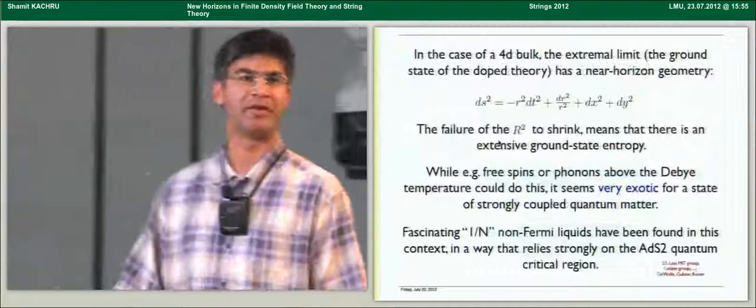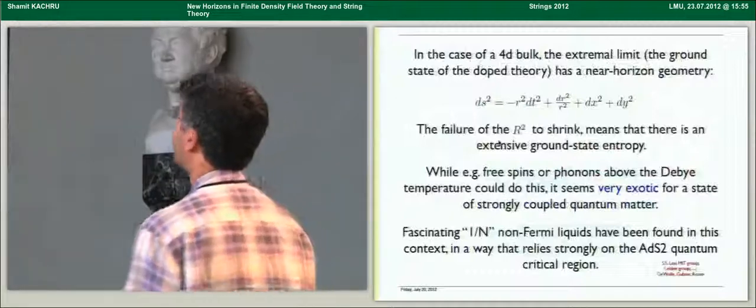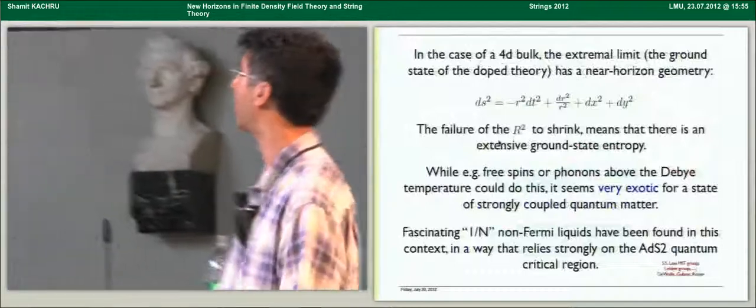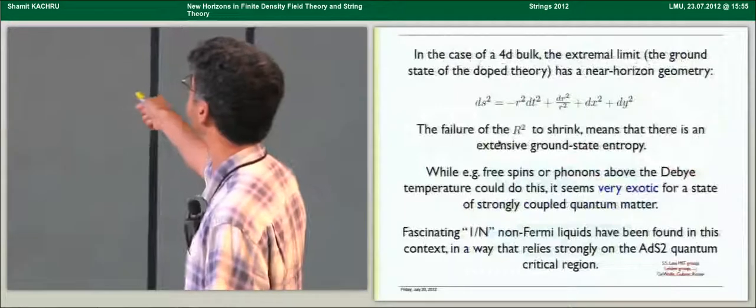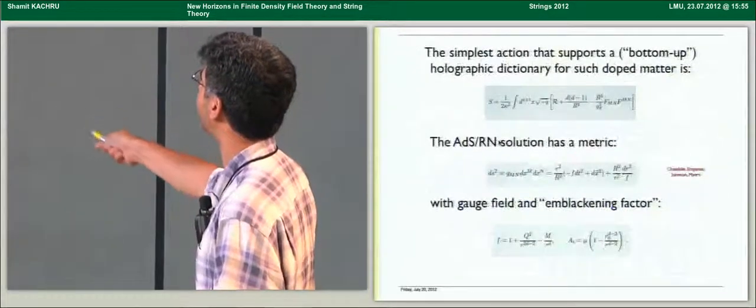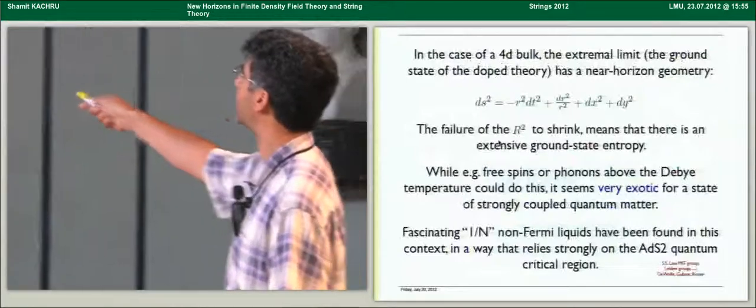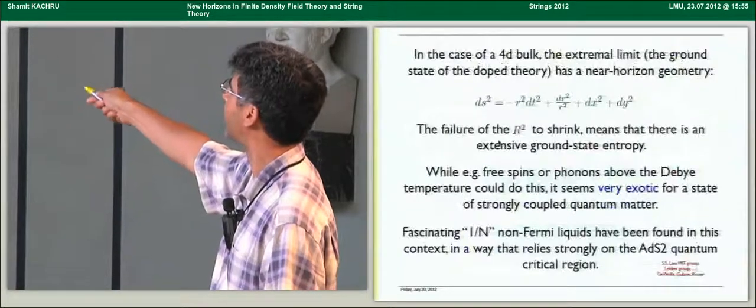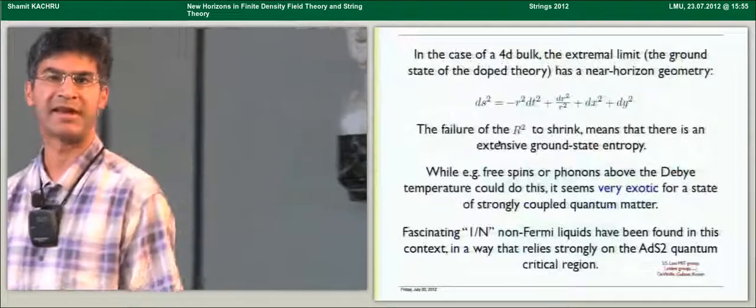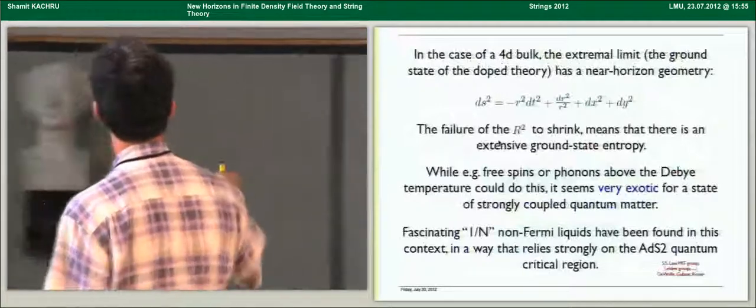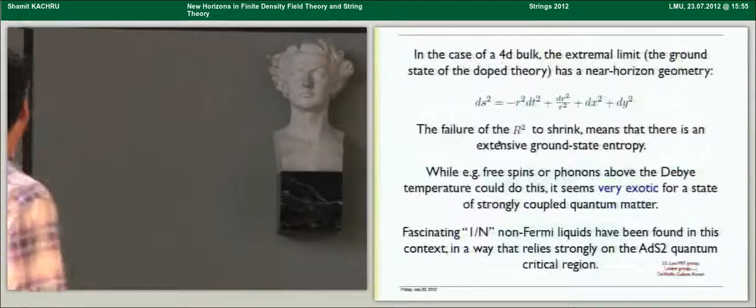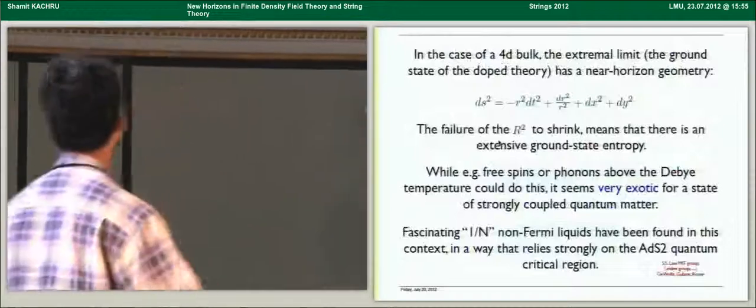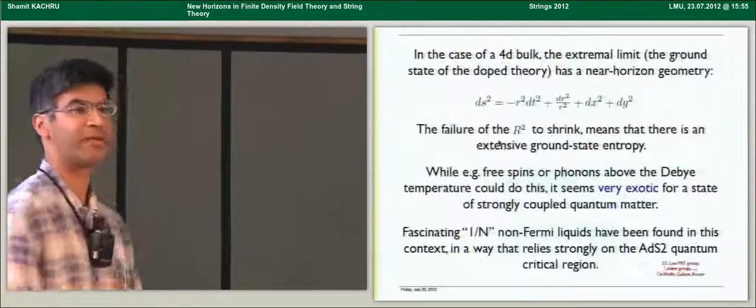Now, in the case of a 4D bulk dual to a 2 plus 1 dimensional field theory, which is of interest in many cases, the extremal limit, which would be the ground state of the doped theory, the place we might expect to find quantum criticality if we're going to find it anywhere, has a near-horizon geometry that looks like this, much simpler than this complicated metric. And, in fact, if you stare at this for a second, you recognize that dx squared plus dy squared is just the metric on R2, and this is just the metric of AdS2. So the geometry in the near-horizon is AdS2 times R2. Now, the failure of the R2 to shrink as you go towards the horizon means that the area of the black hole is not shrinking. There's constant area, in fact, divergent area. And so there's an extensive ground state entropy. Whatever this zero temperature state is, it's very unusual.